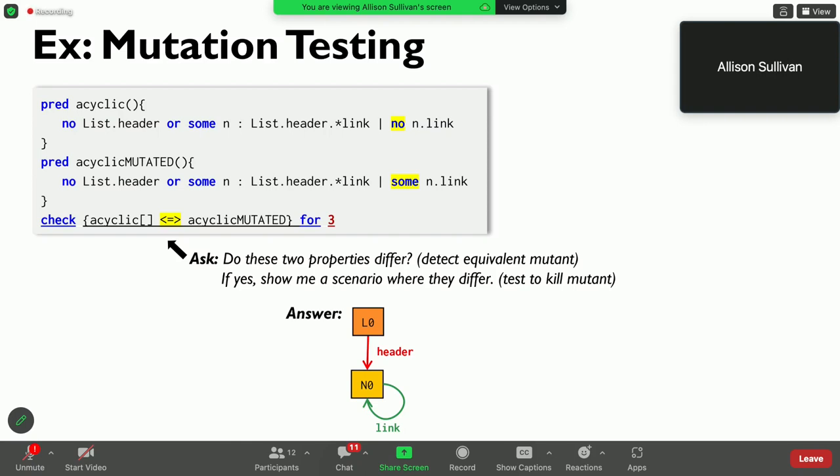We can actually just ask the language to check for equivalence, and if they're not equivalent, if they do differ, then we do have the support in these languages to actually generate that scenario that shows their difference in behavior, so we can automatically create this test that kills the mutant. And so, we are actually able to solve these really hard problems to do mutation testing in other languages, really simply in the modeling language, just leveraging the nature of its execution.